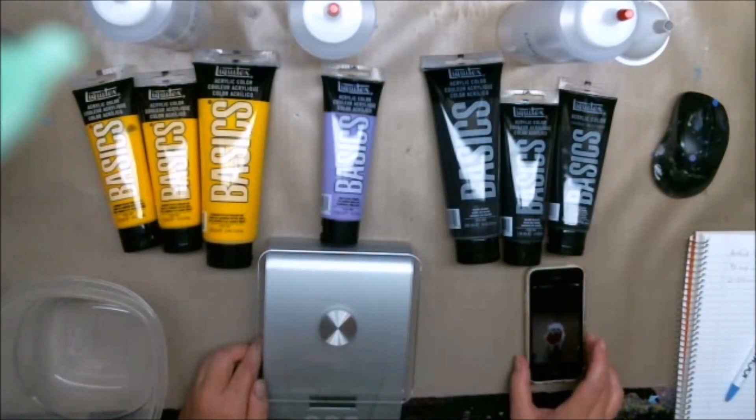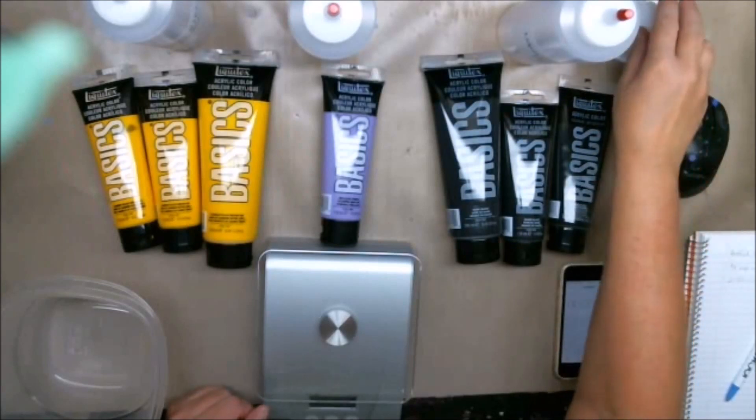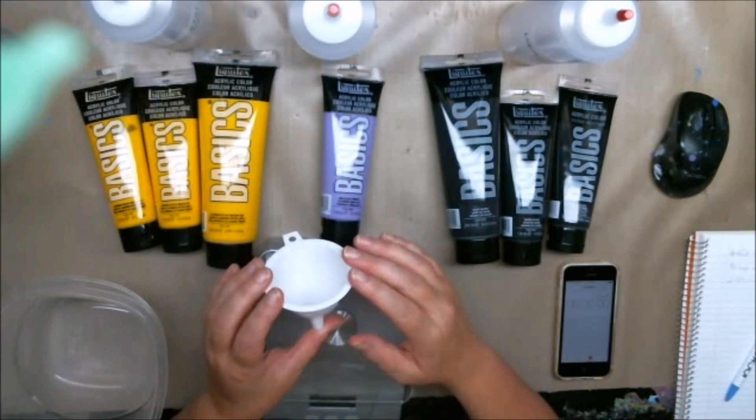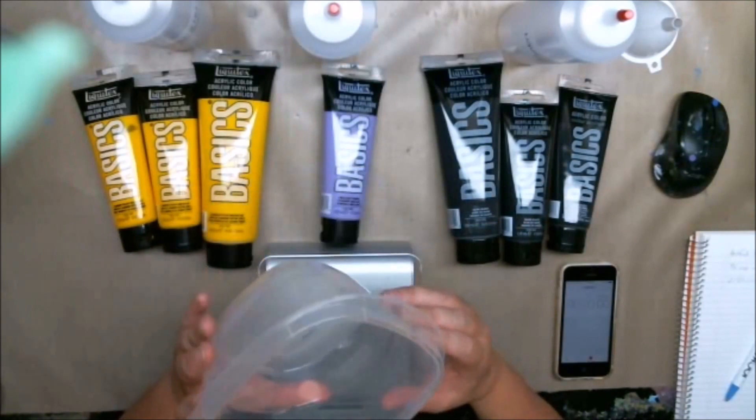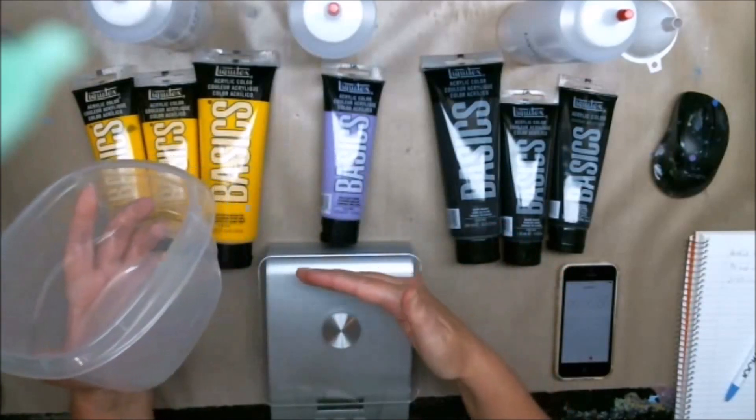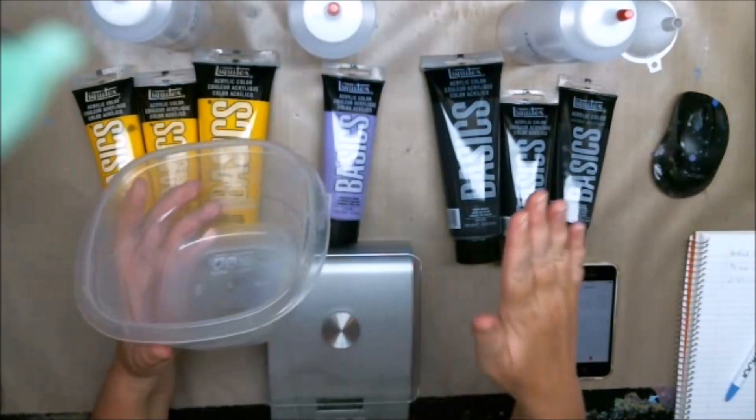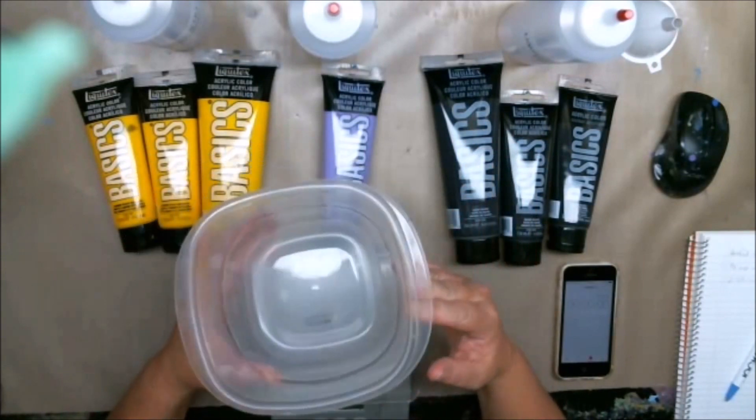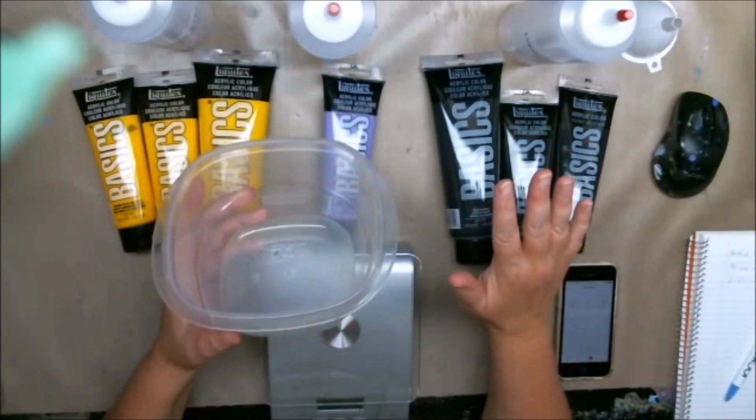And then on my phone I have the stopwatch feature because we're going to time how long it takes the paint to go through the funnel so that we can measure the viscosity. So I'm going to show you how to mix the paint, test the paint for viscosity in this container. And once I got a consistency that I really liked, because I weighed out my ingredients, I didn't have to test for viscosity every single time because Liquitex paint is consistent from one batch to another.